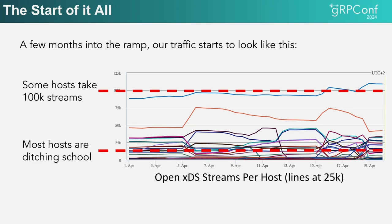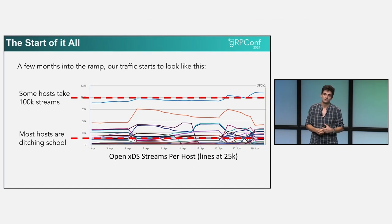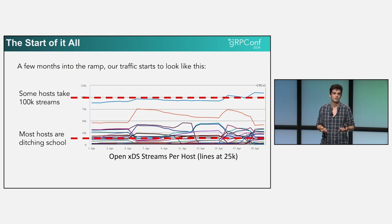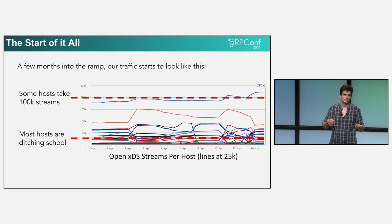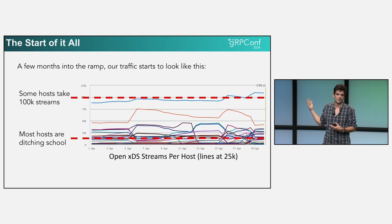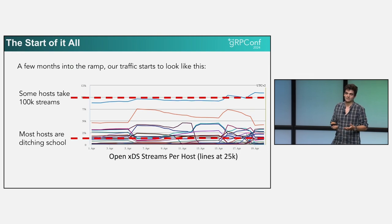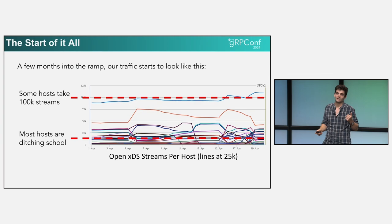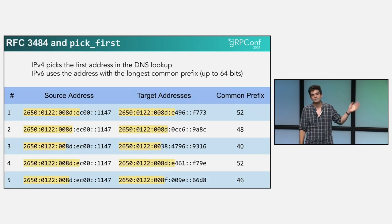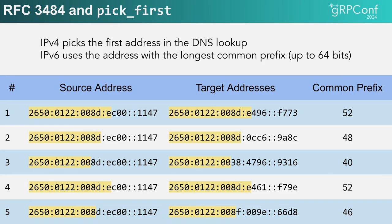What's happening is that the default setting for gRPC is the pick-first strategy. Pick-first just picks the first IP it gets from the DNS record, and at LinkedIn, DNS records are shuffled every three seconds — that's what the TTL is. So we would expect that every single time it picks an IP, it should pick a random one. So why aren't we getting an even distribution? This is where you get to meet my personal nemesis: RFC 3484, which corresponds to the IPv6 migration that was happening at the same time.